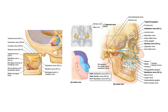These three divisions go through three foramens or fissures. The ophthalmic goes through the superior orbital fissure. The maxillary goes through the foramen rotundum. And lastly, the mandibular goes through the foramen ovale. So: superior orbital fissure, foramen rotundum, foramen ovale.